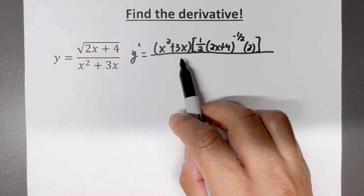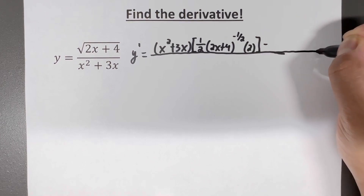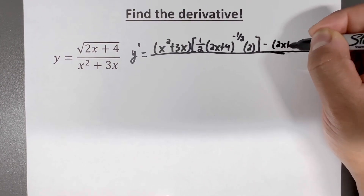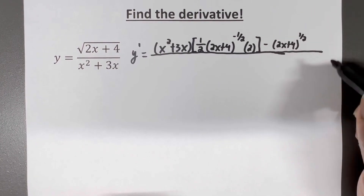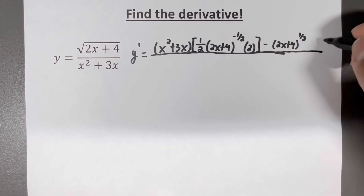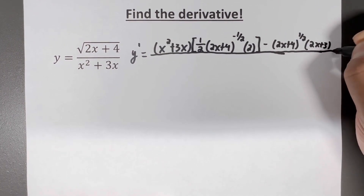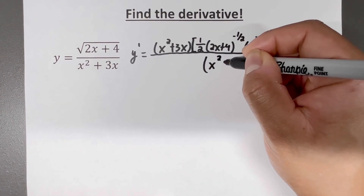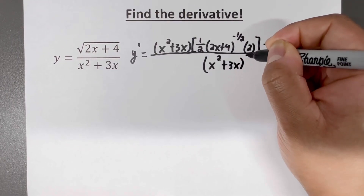The quotient rule says the bottom one as it is times the derivative of the top, minus the top one as it is — and I'm just going to leave it in the form 2x plus 4 raised to the one half — times the derivative of the bottom, which would be 2x plus 3. And we've got that all over the bottom piece squared, so it's x squared plus 3x raised to the quantity squared.